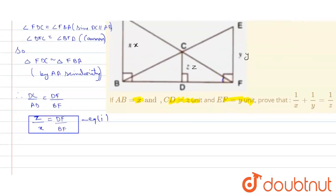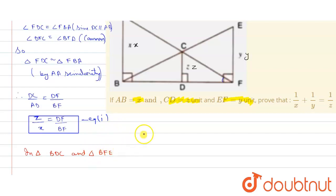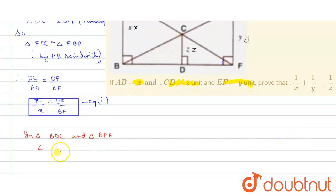Now similarly, in triangle BDC and triangle BFE, angle BDC equals angle BFE, since both lines DC and EF are parallel.